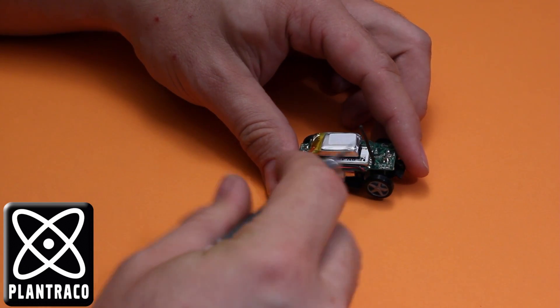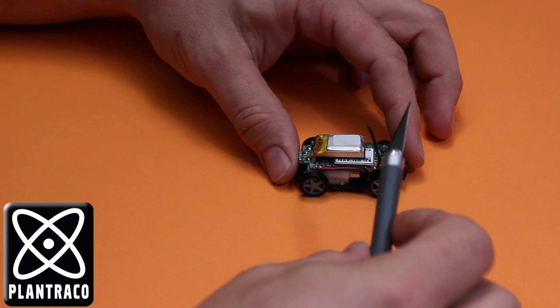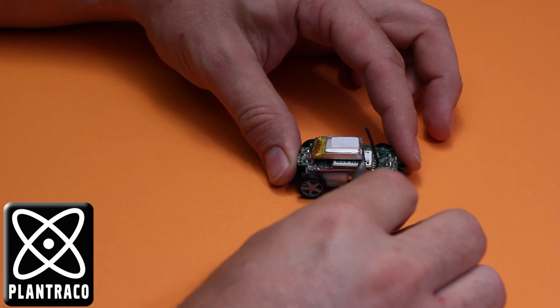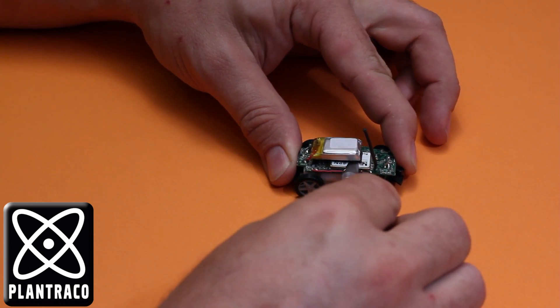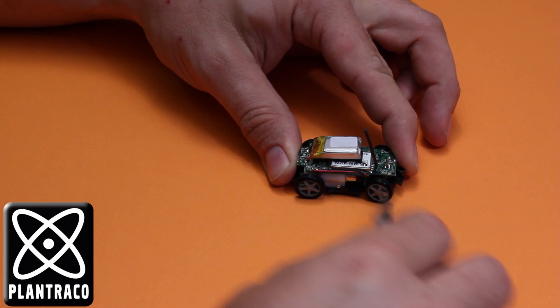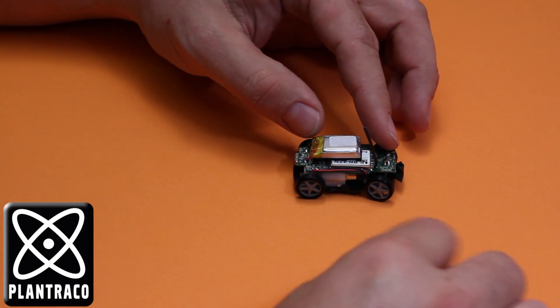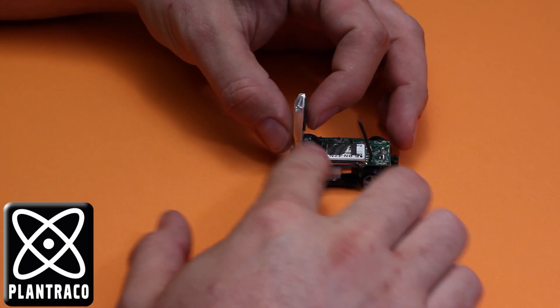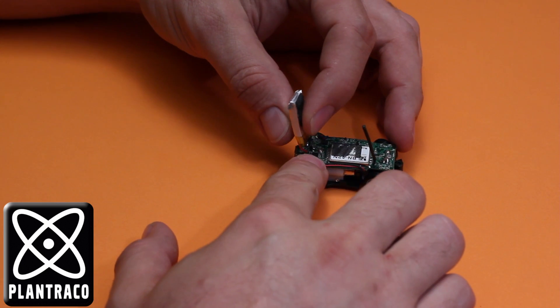So to do that I'm just going to fold the antenna up out of the way and then you can just use a hobby knife or an X-Acto knife and carefully cut the foam tape that's between the battery and the circuit board. You want to be very careful not to cut the foil case of the battery.